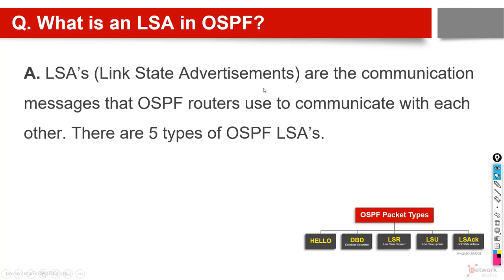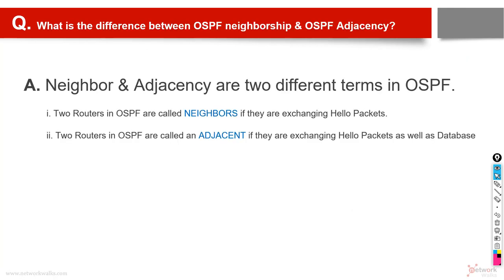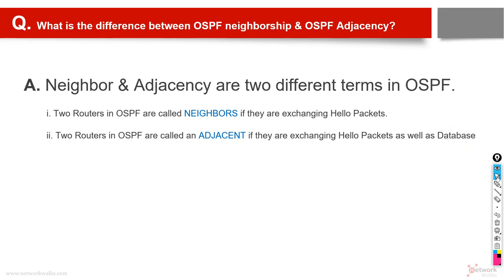What is the difference between OSPF neighborship and adjacency? They are two different terms, though often exchanged incorrectly. Two routers are called neighbors if they are only exchanging Hello packets — like saying hi to a stranger, nothing more. Adjacency means the routers are exchanging Hello packets as well as full databases — like very close friends sharing everything. When routers reach full state, they are called adjacent routers or they have formed an adjacency. So neighborship and adjacency are different.